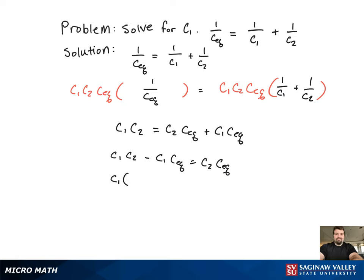Now we're going to factor out the C1 from the two terms on the left-hand side of the equation. Now using division, we're going to go ahead and get the C1 by itself.